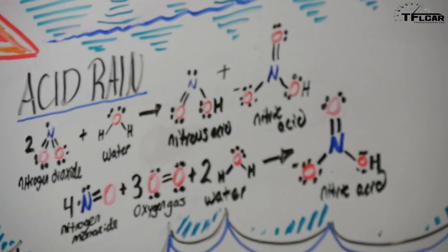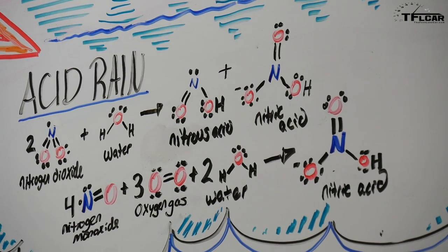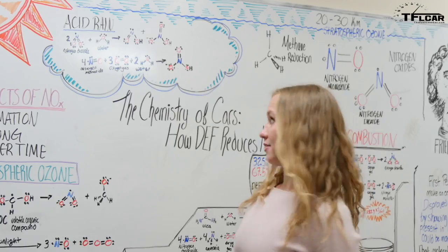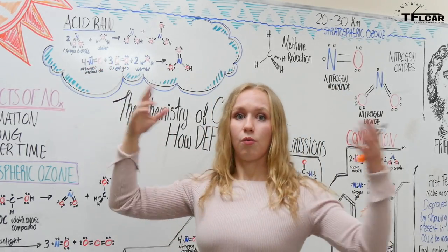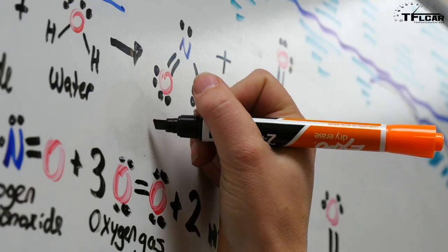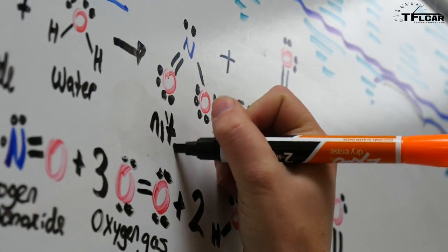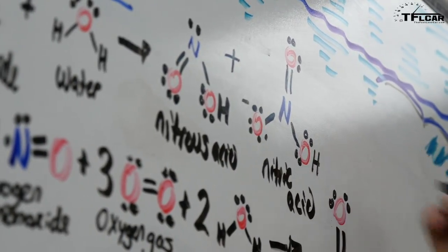So another big reason for reducing NOx emissions is definitely going to be its contribution to acid rain. So basically what happens is you have nitrogen dioxide reacting with water vapor in the air, such as the cloud, and you're going to get nitrous acid, and you're also going to get nitric acid, both of which are contributors to acid rain.